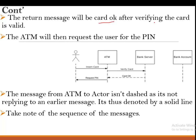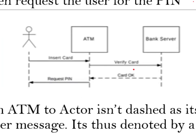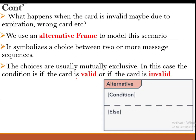All outgoing lines are solid lines, with the exception of a reply or return message, which is denoted by a dashed line. The return message will be 'card is okay,' presuming the card was valid. In that case, we need to request the user to enter the PIN. The message from the ATM to the user is a solid line because it is not a reply to any previous message.